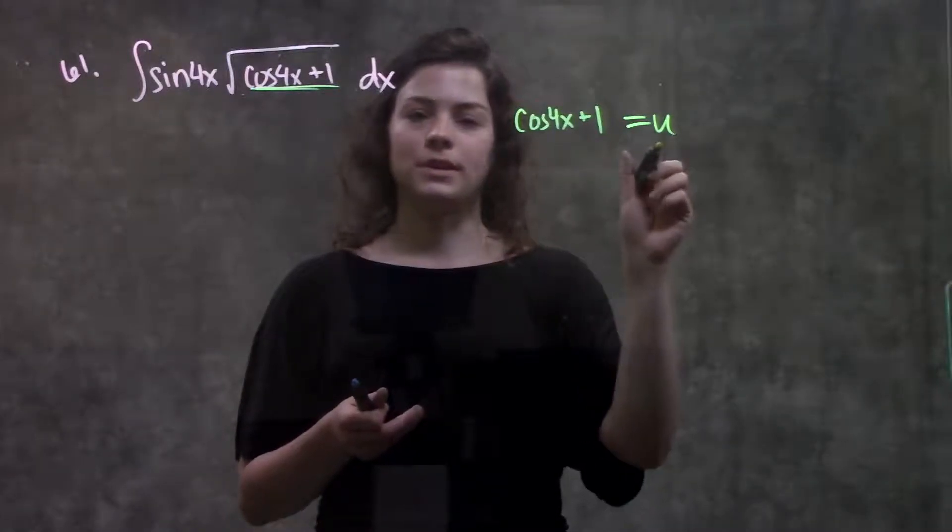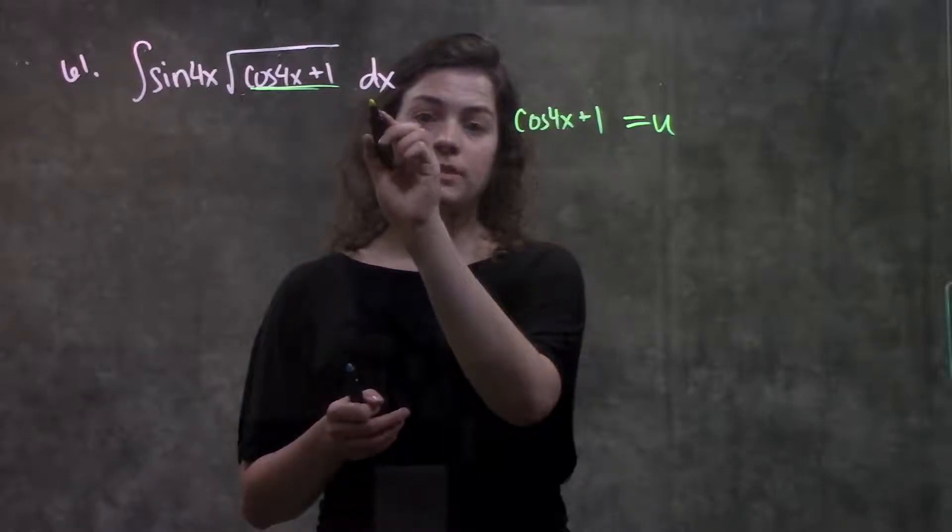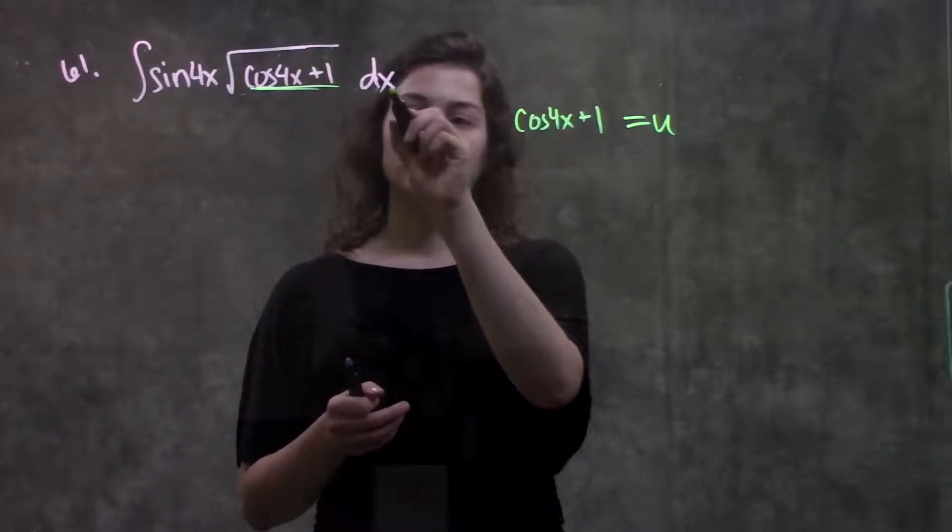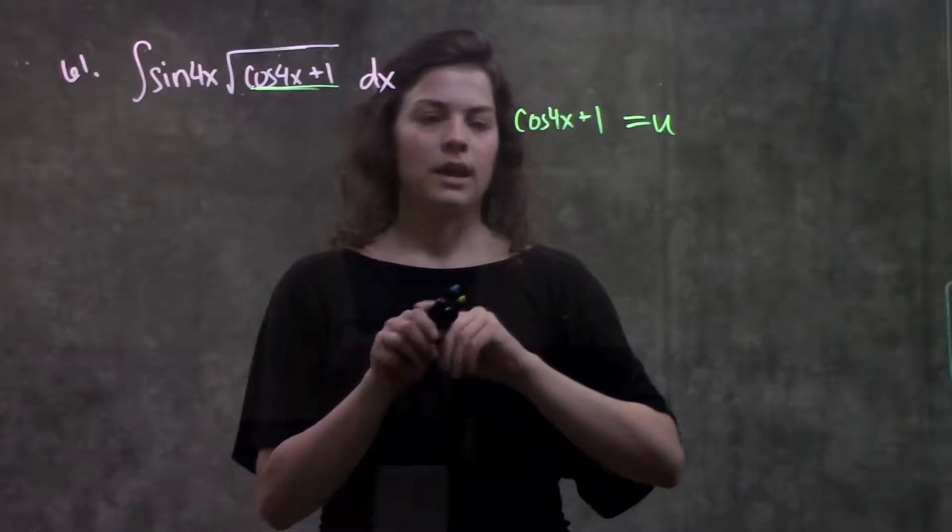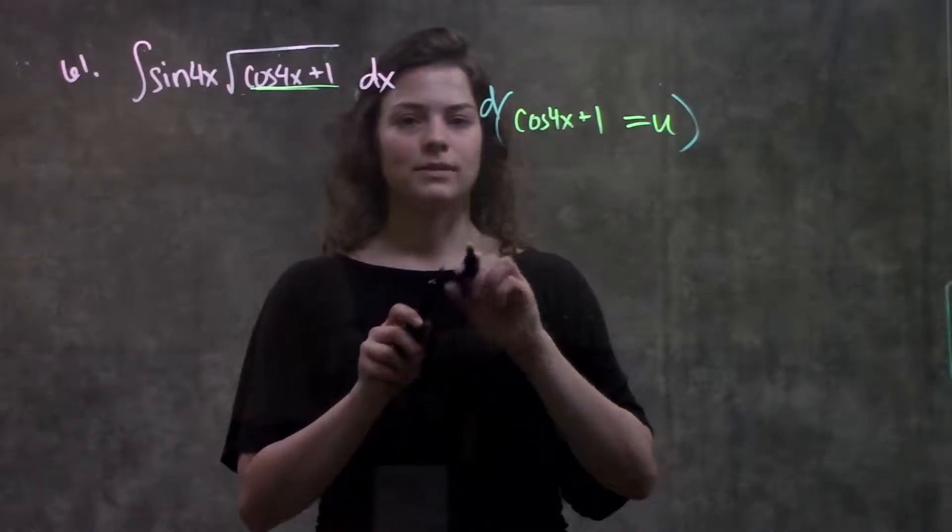So I have a part of my function equal to u. I have a dx over here though, and I want to rewrite this in terms of du also. So in order to get a value for dx, I'm going to take the derivative of both these sides and see what I get.